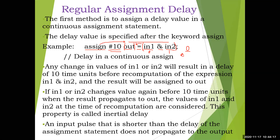Any change in values of in1 or in2 will result in a delay of 10 time units before the result of in1 AND in2 is assigned to out. If in1 or in2 changes value again before 10 time units and the result propagates to out, the values of in1 and in2 at the time of recomputation are considered. This property is called inertial delay — an input pulse shorter than the delay of the assignment statement does not propagate to the output.